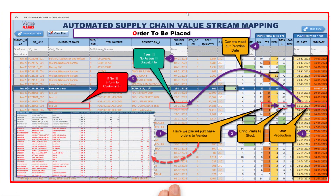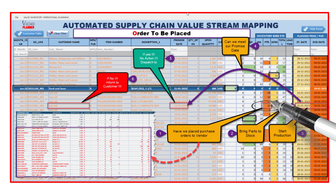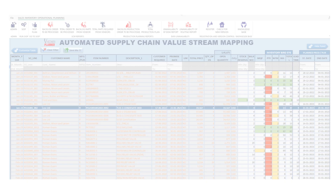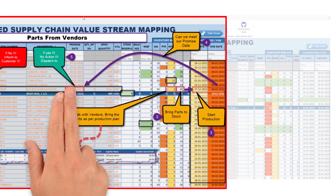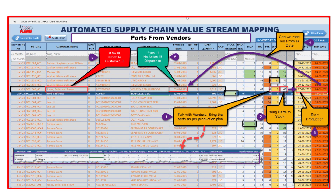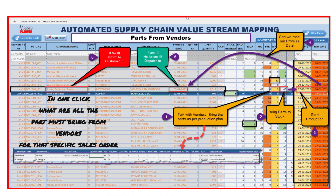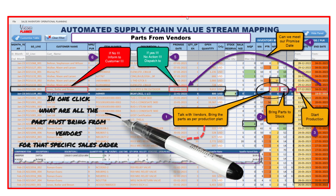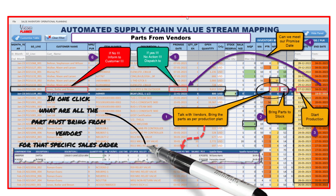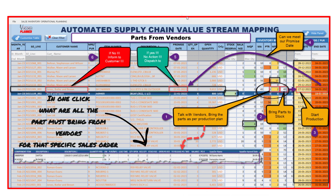Step four: Order to be placed to vendors. Efficiently manage your orders with vendors — our application streamlines this process, ensuring timely replenishment of your inventory. Step five: Parts from vendors. Track the parts received from vendors with precision, which is vital for maintaining a smooth flow in your production line and reducing potential bottlenecks.